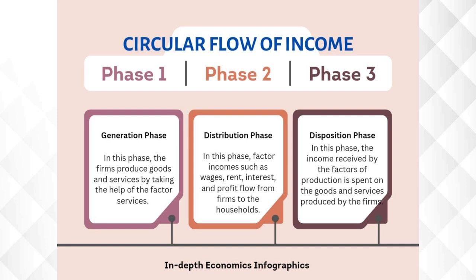There are three different phases in the circular flow of income. The first phase is the generation phase, in which firms produce goods and services by taking the help of factors of production. The second phase is the distribution phase, in which factor income such as wages, rent, interest and profit flows from firms to the households. The last phase is the disposition phase, in which income received by the factors of production is spent on goods and services produced by the firms.